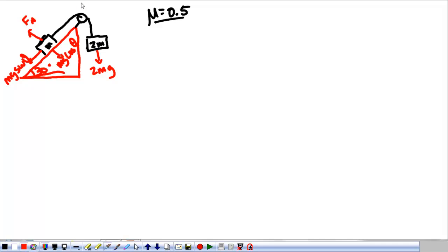2M is bigger than M, so let's go ahead and say that we accelerate this way. If that's the case, we're also going to have friction back. So Mg sine of theta down, Mg cosine of theta in.